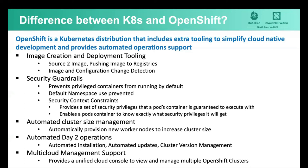Day two operations is another area where OpenShift really shines. It has automated cluster size management — it can automatically provision new worker nodes to increase your cluster size, a feature not in vanilla Kubernetes. It supports automated installation and automated updates, ensuring the right version of OpenShift runs on the right version of RHEL for full stack consistency. It uses cluster version management to automate lifecycle management. OpenShift also provides multi-cloud management support with a unified cloud console to view and manage multiple OpenShift clusters across multiple clouds.